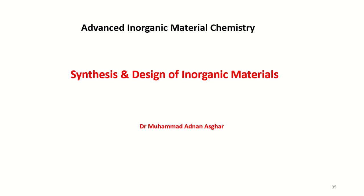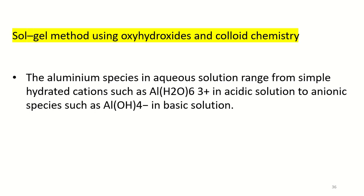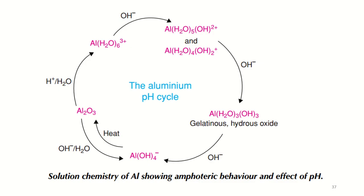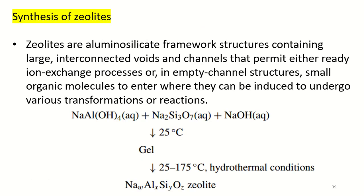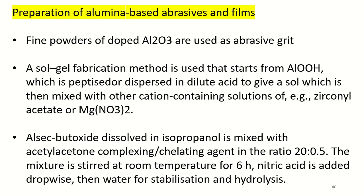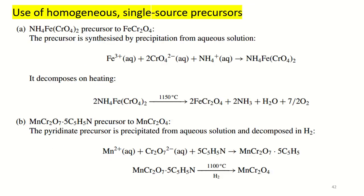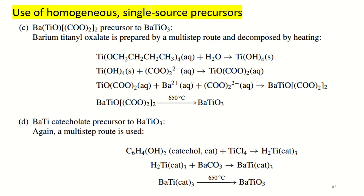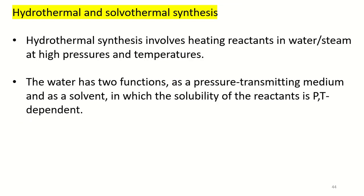So far we have discussed the high temperature synthesis process for the manufacturing of desired inorganic materials. In the last two lectures, we were discussing low temperature methods, including the sol-gel method using oxy-hydroxides and colloidal chemistry. The synthesis of zeolites, alumina-based abrasives and films, and the use of homogeneous single-source precursors have also been discussed.